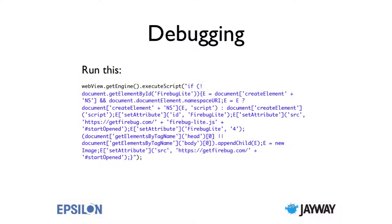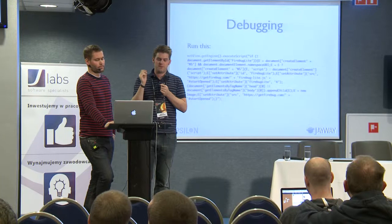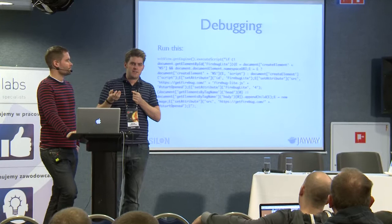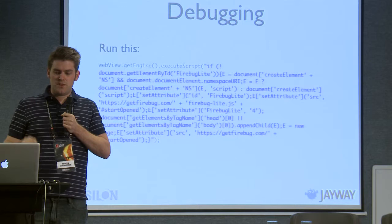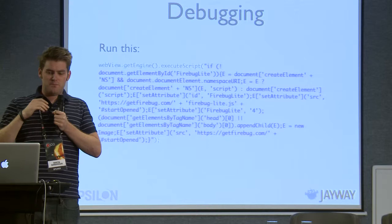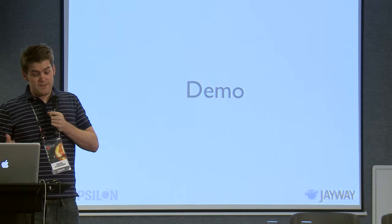But luckily you can do this — and this is very nice and not a hack. What this does is load something called Firebug Lite into the WebView. Firebug is a debugging tool for Firefox, and the Lite version is implemented entirely in JavaScript and works great in the WebView. With this strange script that you can easily copy and paste, you basically get Firebug from Firefox within your own application.